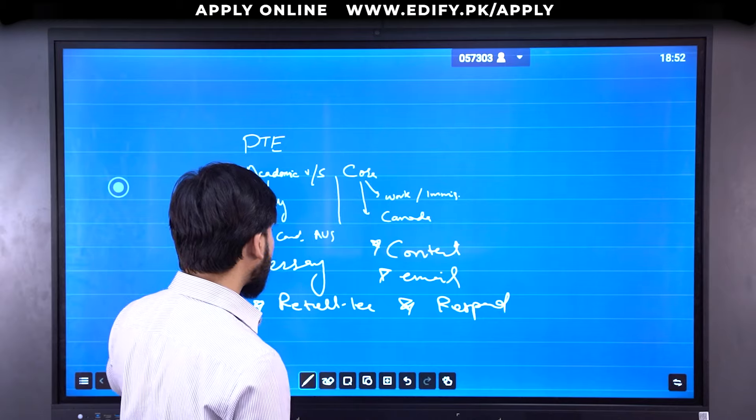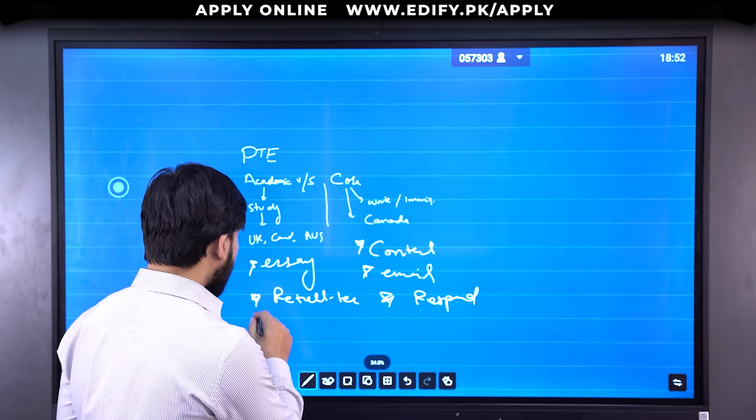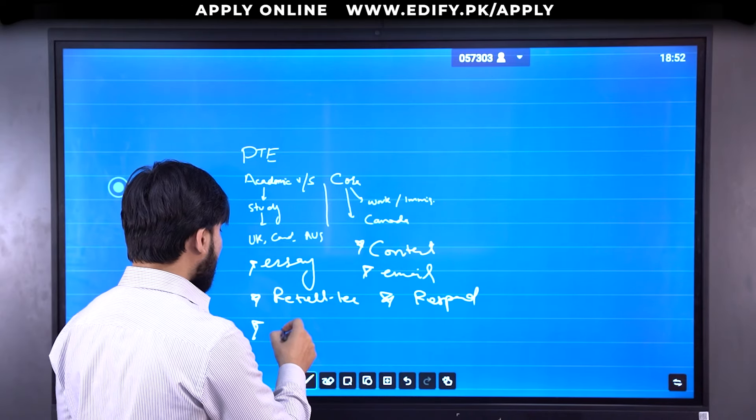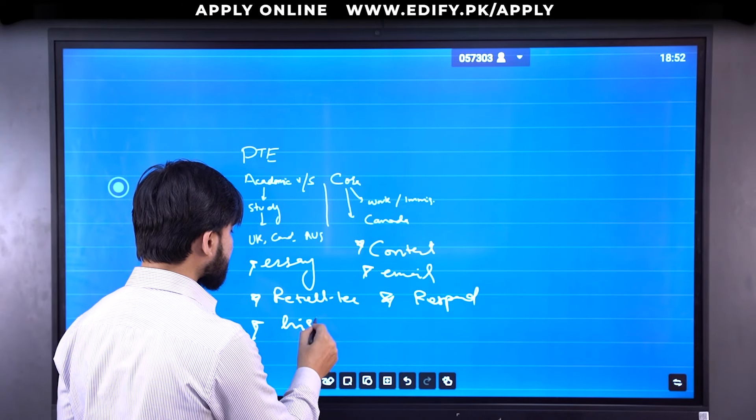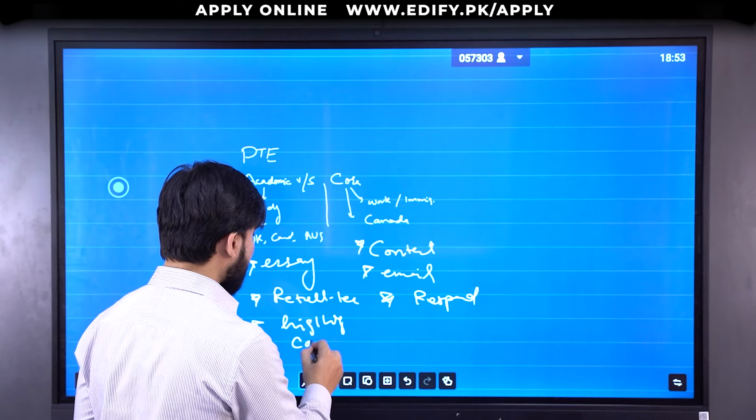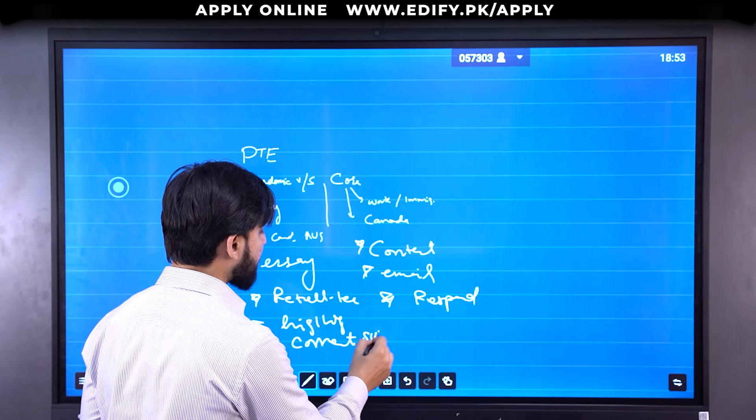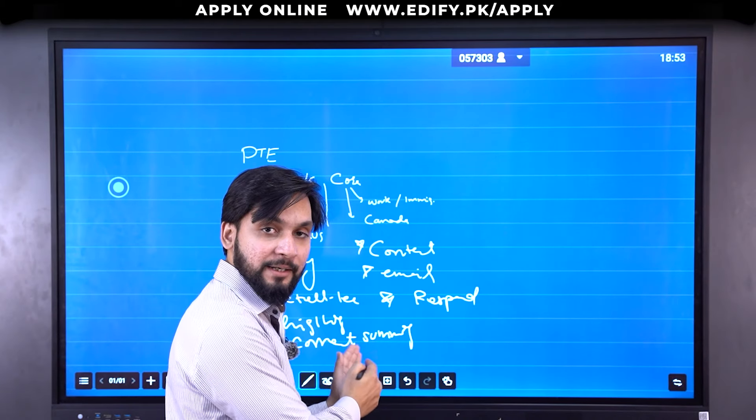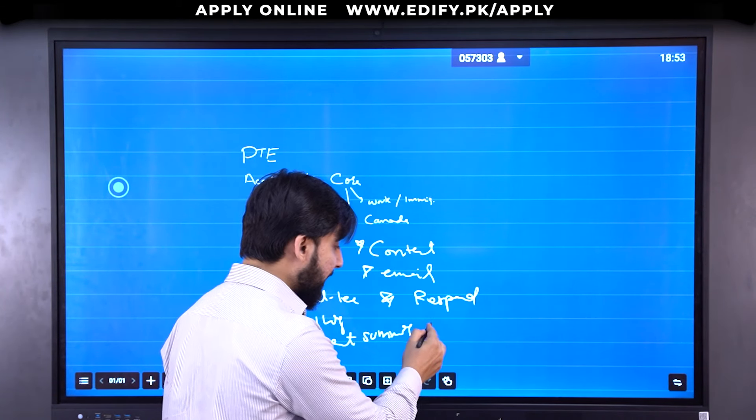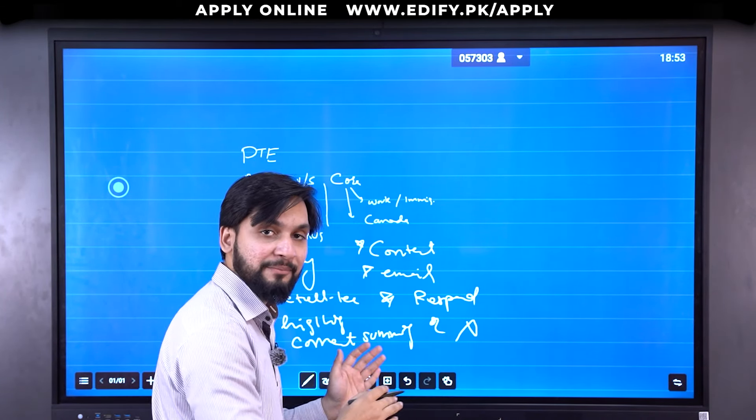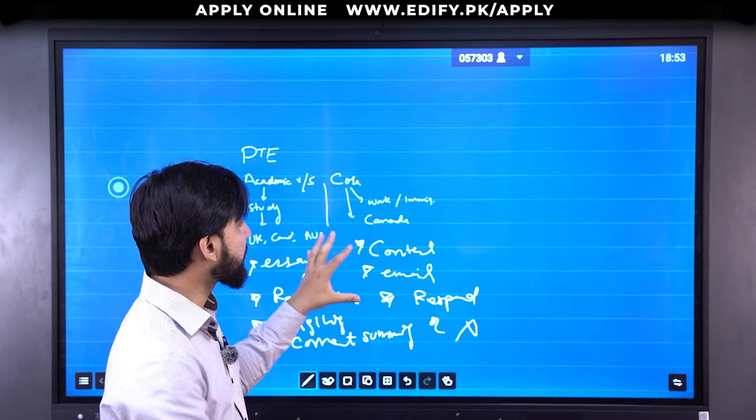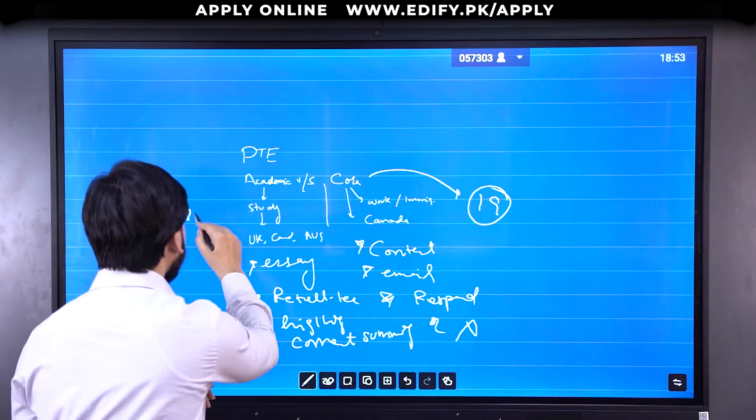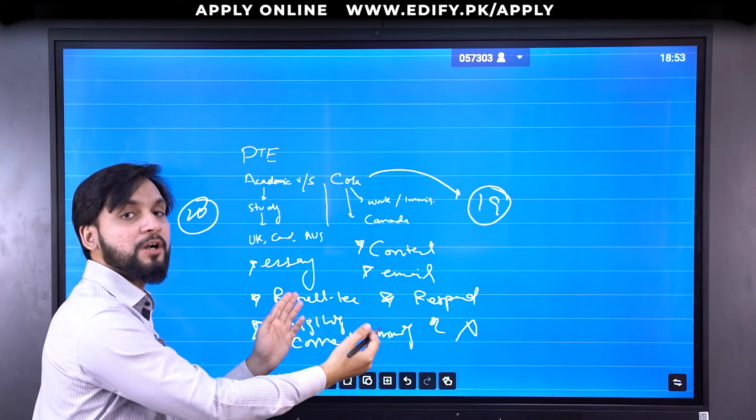Listening has only one question you will not get in PTE Core - highlight correct summary. So we have total 19 questions for PTE Core instead of 20.